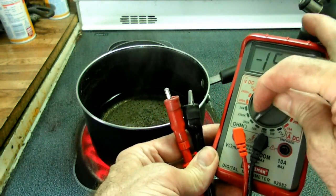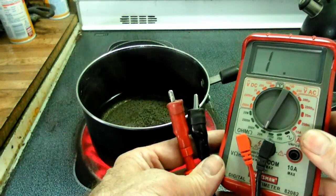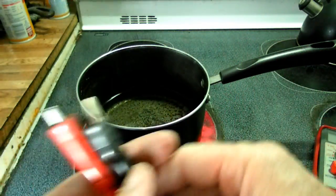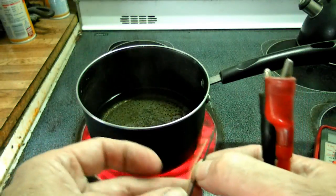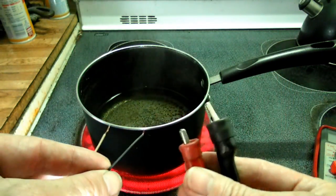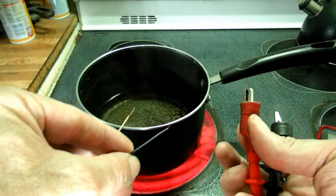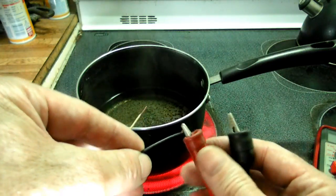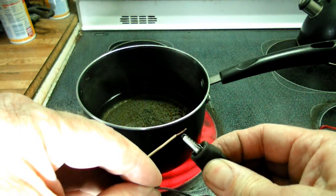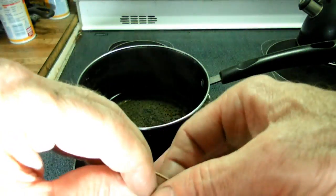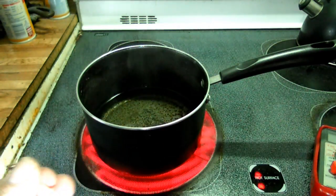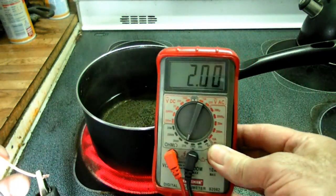We'll turn to the ohms setting, about 20K, and now we'll take our leads. Click it on to that, we should see something on the meter right now, and we do.